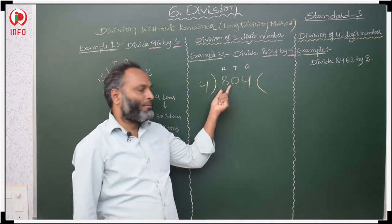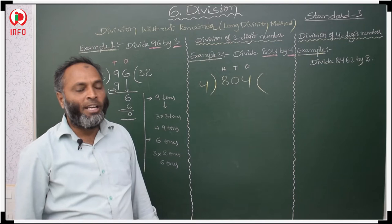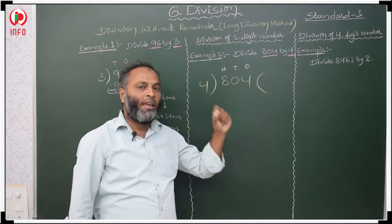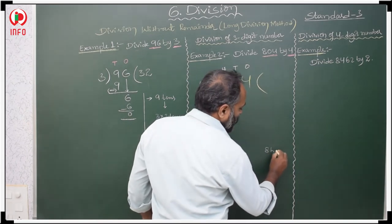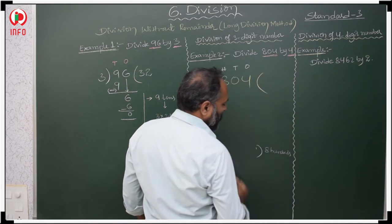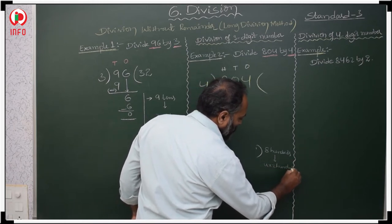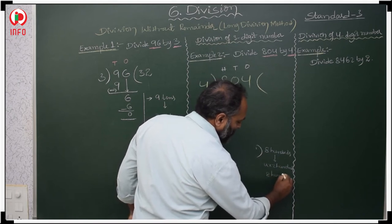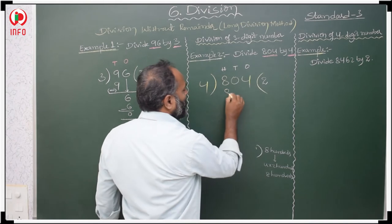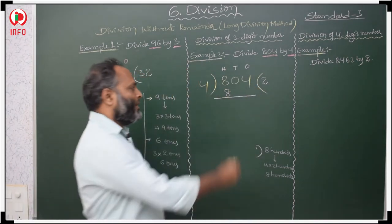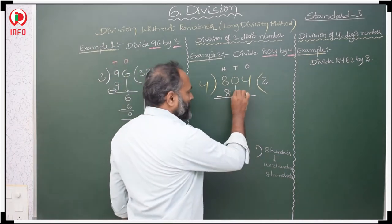The extreme left digit is 8 — that is 8 hundreds. When will you get 8 hundreds? Read the 4 table: 4 ones, 4 twos. Here the first step: 4 times 2 hundreds is 8 hundreds. So 4 twos are 8. We write 2 in the 100's place of the quotient. Then 8 minus 8 is 0 — no need to take that 0.